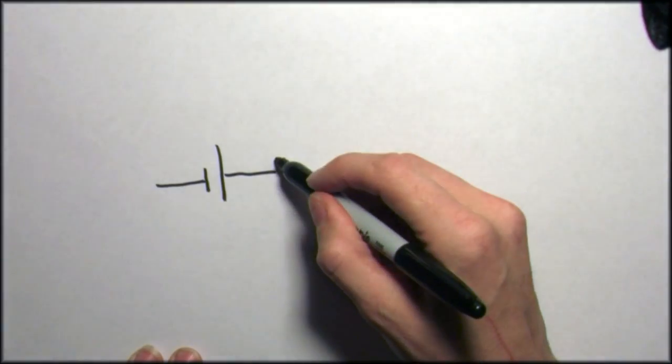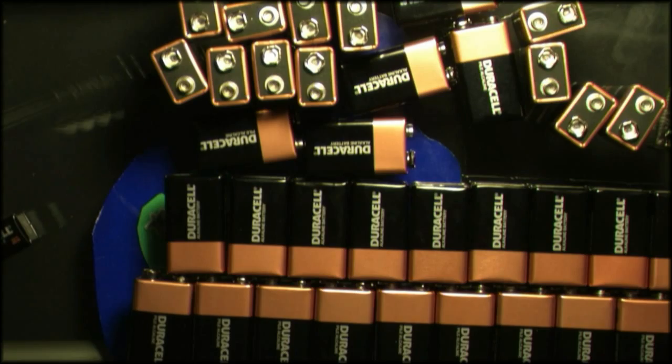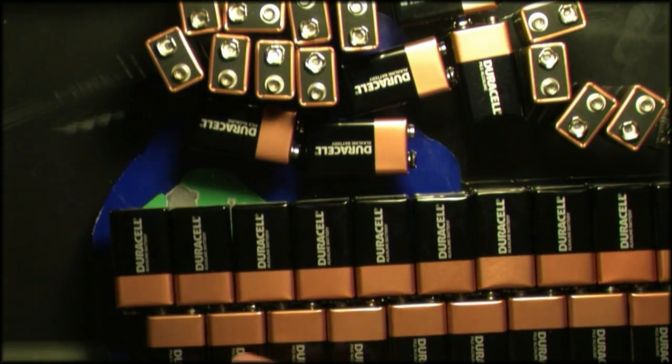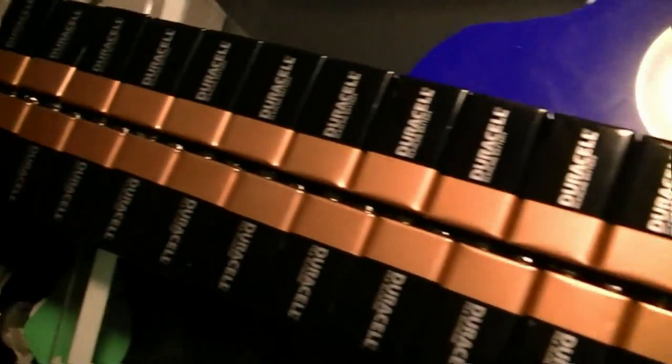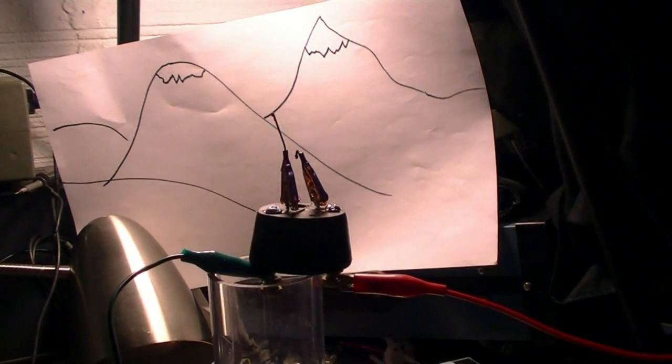You can increase the voltage of a battery by adding more cells stacked in series. I'll demonstrate this by hooking 40 9-volt batteries together. Oops, I better get some bigger electrodes.